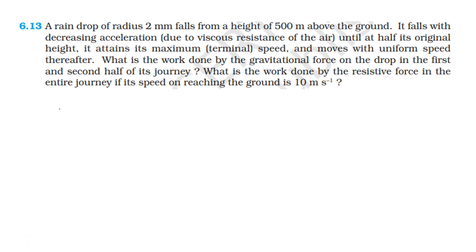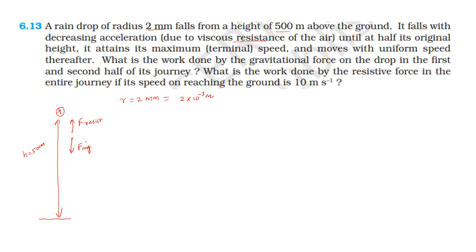Now we have a raindrop. The resistance force acts in the direction opposite to the motion, and the gravitational force acts downward. The particle moves with decreasing acceleration. The initial velocity is 0, and at half the distance — 250 metres height — the velocity is 10 metres per second.